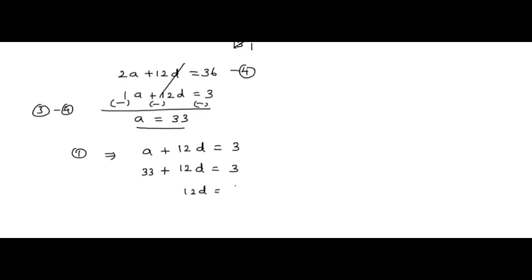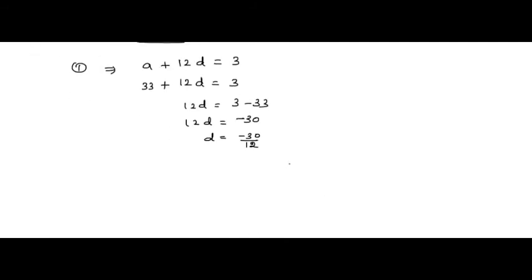We get 2a plus 12d equals 36, minus a plus 12d equals 3. Solving gives us d equals minus 30 divided by 12, which simplifies to d equals minus 5 by 2.